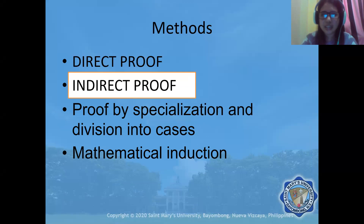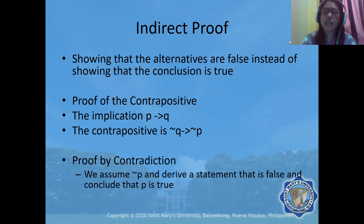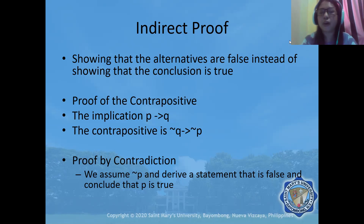So what is an indirect proof? This is showing that the alternatives are false, instead of showing that the conclusion is true. We can do that either using proof by contrapositive or proof by contradiction.